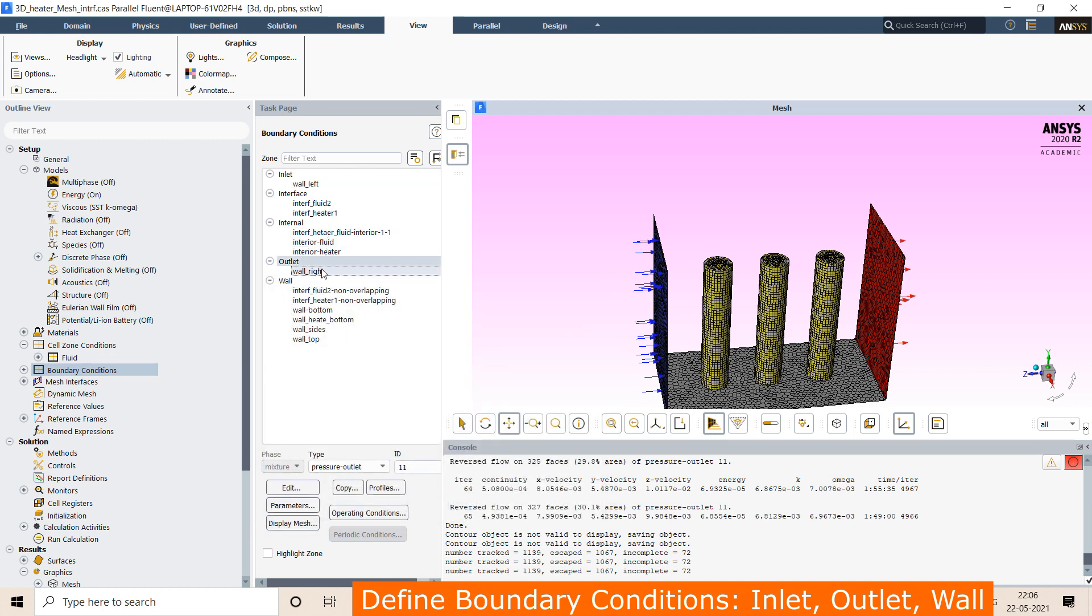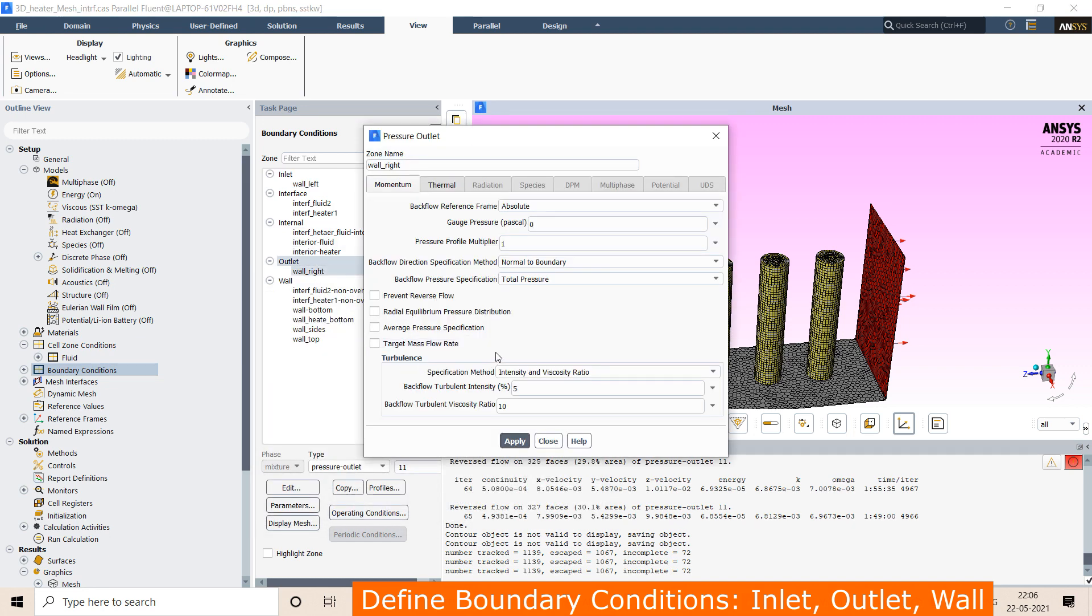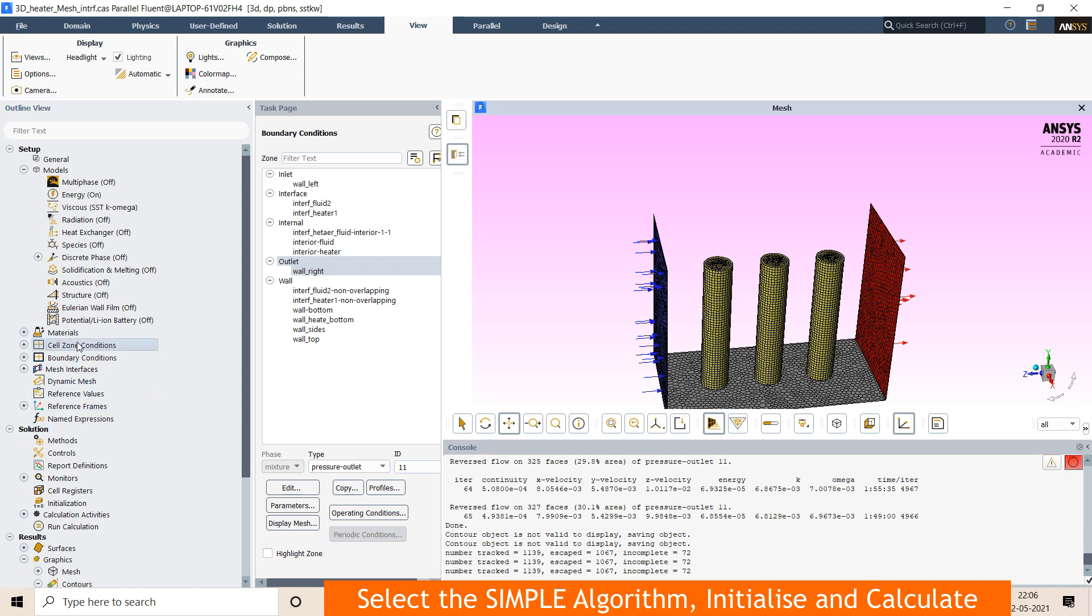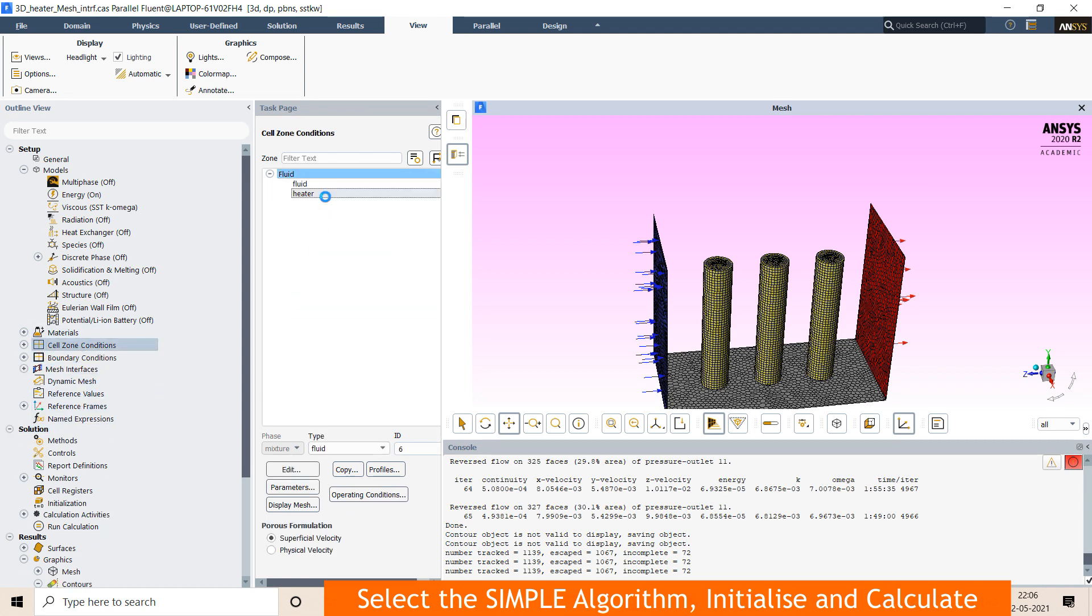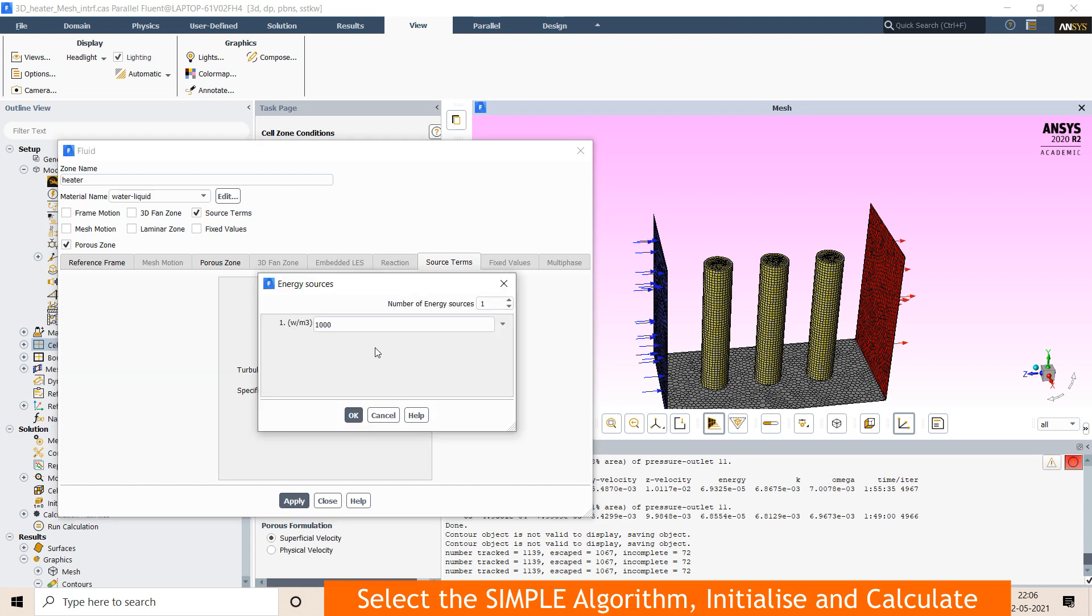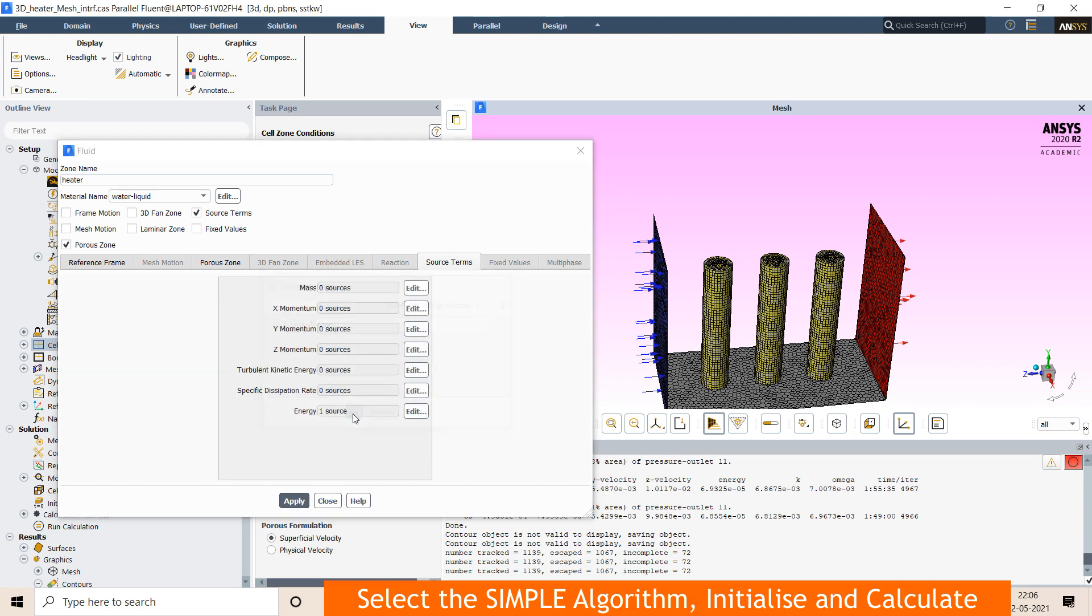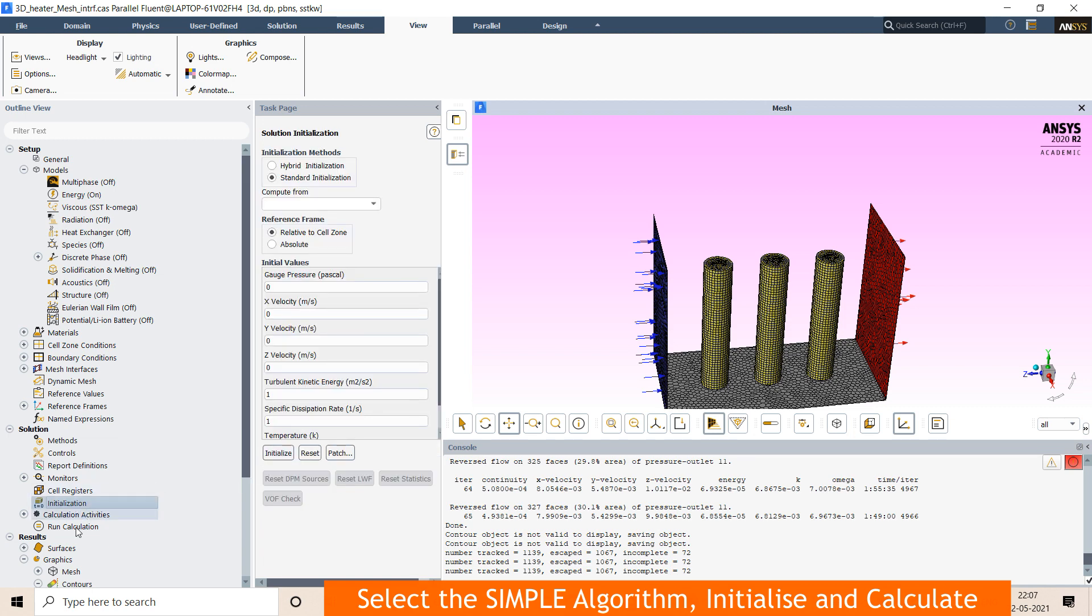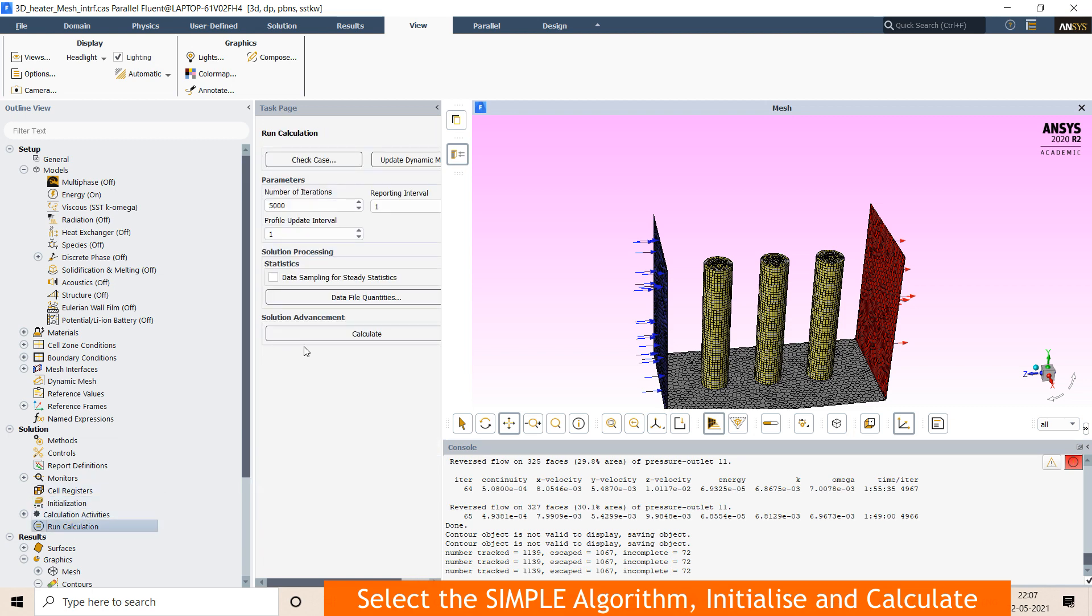Then the outlet: I am setting it as pressure outlet. Then for the porous medium, I can also define a heat source as 1000 watts. Apply. Then initialize and calculate.